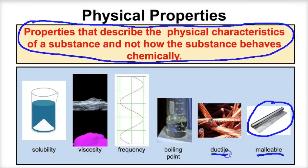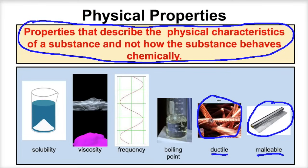If we take a look at ductile or ductility, that is the ability a metal has to be turned into wire. For example, if we said copper is ductile, that would be a physical property of that copper. That's not telling us how it's going to chemically react with something else.